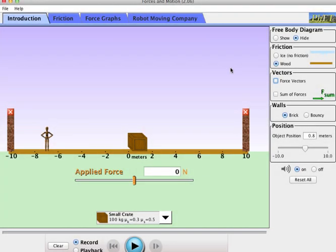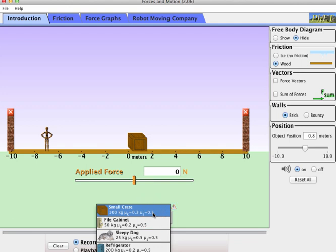So I'm using the PhET Forces of Motion app here, and I want to look at frictional forces. I'm going to slide this object around and increase the force that's being applied to this crate. You can see there's some information down here about the crate. It tells me that the crate has a mass of 100 kilograms, and then there's these coefficients of friction. The coefficient of kinetic friction is 0.3.